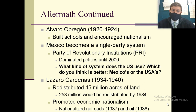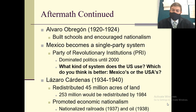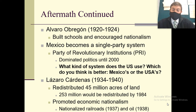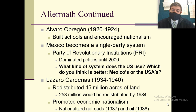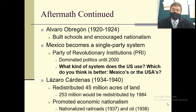In the aftermath, Obregón became president in 1920. He built schools and encouraged nationalism — pride in your country. Mexico became a single-party system, unlike the US two-party system. After Obregón, a couple years later you had Lázaro Cárdenas, who actually redistributed 45 million acres of land — a huge land giveaway. Up until about 1984, they had given away 253 million acres total. He also promoted economic nationalism, making the railroads and oil industry nationalized, meaning the government took them over.